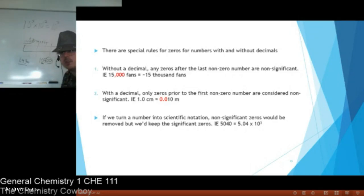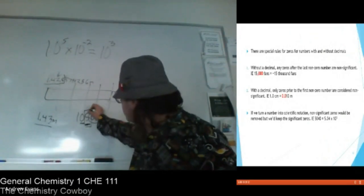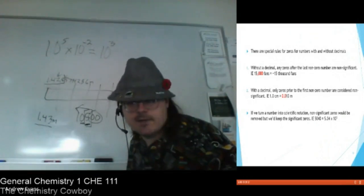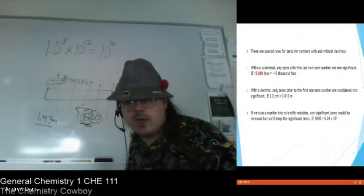So when there are no decimals, any zeros to the left of the last non-zero number are non-significant. So we take the last number, last number, 5. That's our big number, 5. And we're going to count to the left. Every number to the left of that 5 is significant. Every number to the right is not. So without a decimal, every number to the left of that 5 is significant. Without a decimal, every number to the right is not.